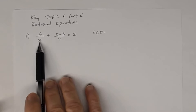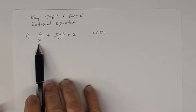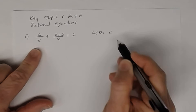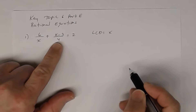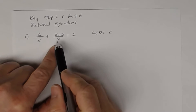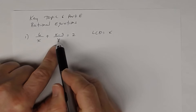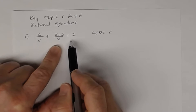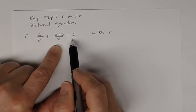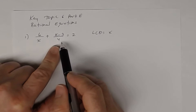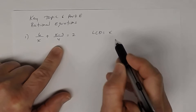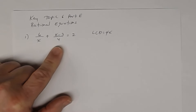Looking at the denominator, that expression is a monomial, so I write it here. The other denominator is 4 (a constant) and then 1. The smallest number that 4 and 1 go into is 4, so your least common denominator is 4x.